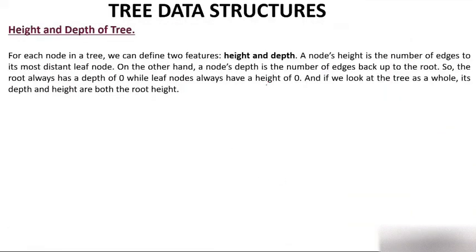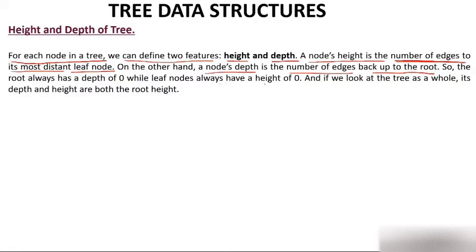Height and depth of a tree — a very important and most confusing topic. For each node in a tree, we can define two features: height and depth. A node's height is the number of edges to its most distant leaf node. On the other hand, node depth is the number of edges back up to the root. The root always has depth 0, while a leaf node always has height 0.